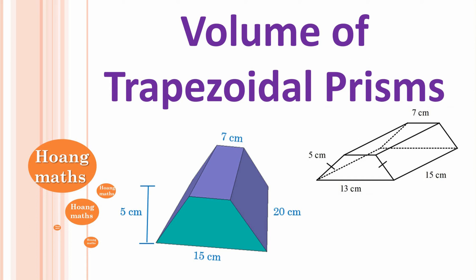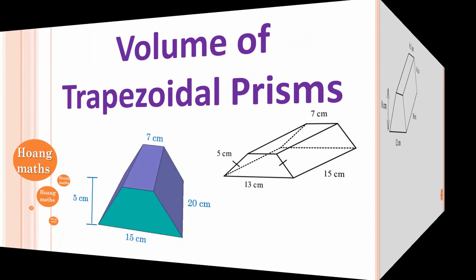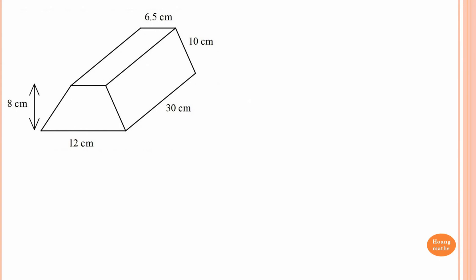If you can, please download or print out the PDF file in the description below so you can work with me. So to find the volume of this, we know that volume of any solid V is equal to area times the perpendicular height. So we need to find the area of this trapezium first, and then we times by 30, because 30 is the perpendicular height.